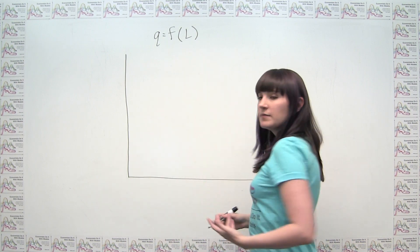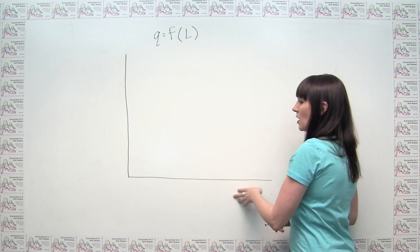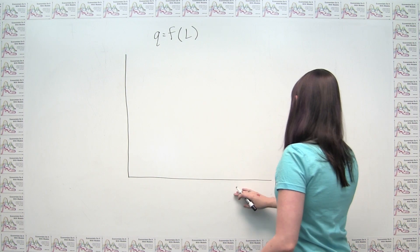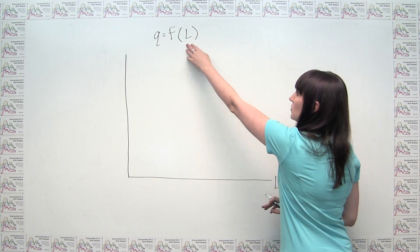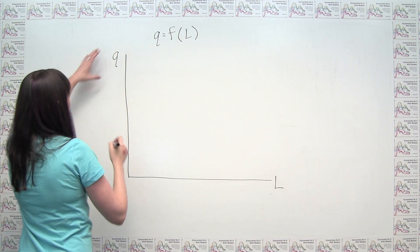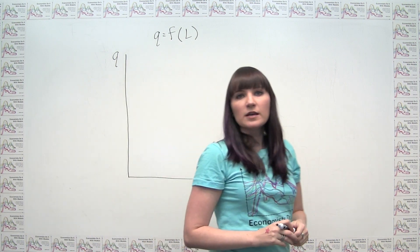Once you understand this, you would see mathematically that a production function as a graph would have labor on the x-axis, because that's what's going into the function, and quantity of output on the y-axis, because that's what's coming out of the function.